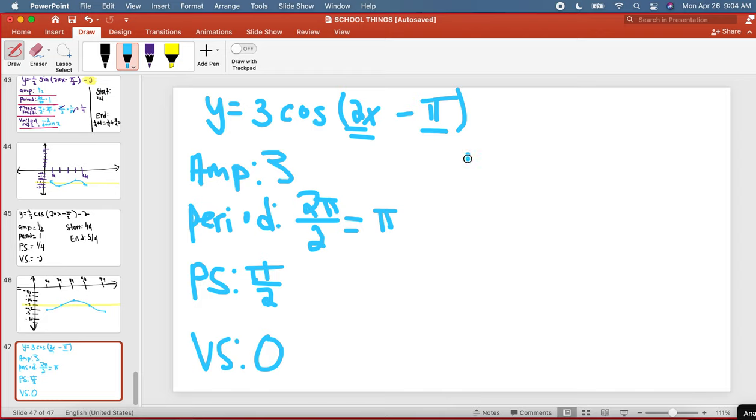I need to find a start point and an end point. Our start point always matches our phase shift, so that's going to be pi over 2. And then our end is going to be pi over 2 plus our period, which is pi. To add these two things together, I need to get like denominators. So I'm going to make this 2 pi over 2. So that's going to equal 3 pi over 2 for our end point.